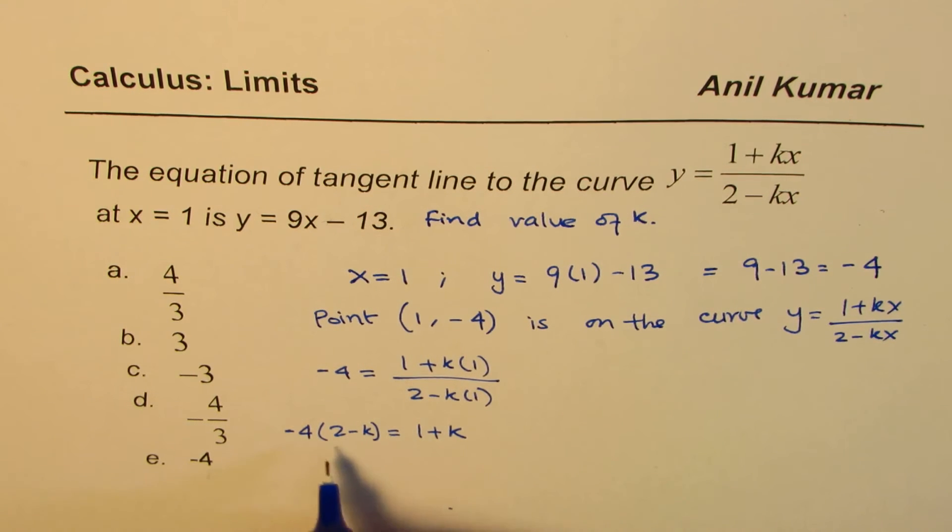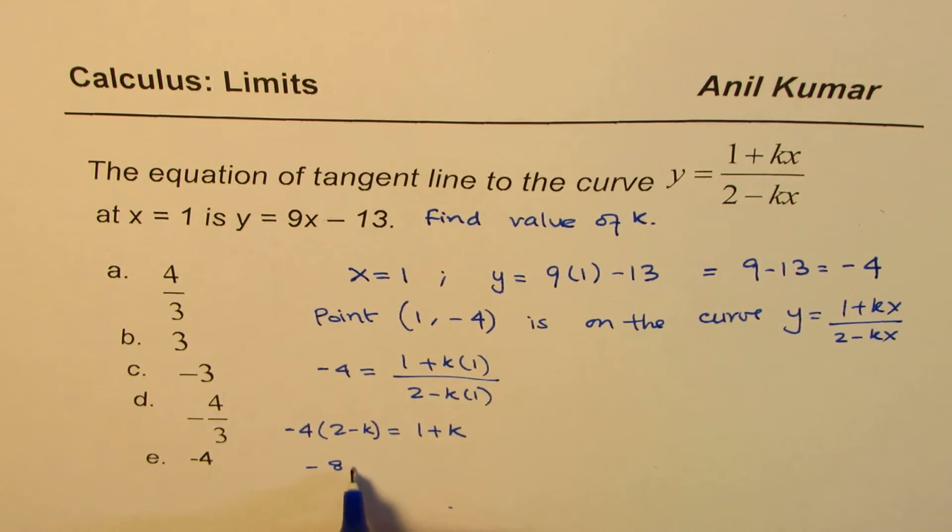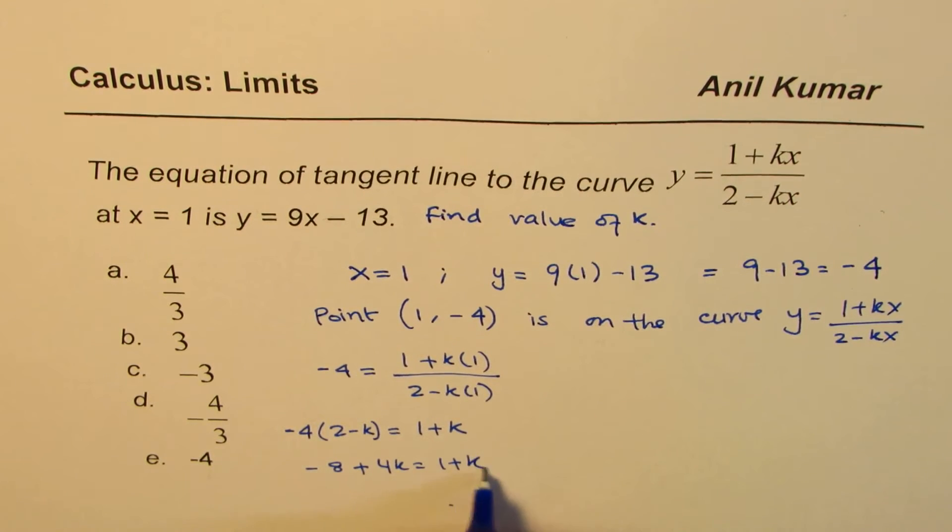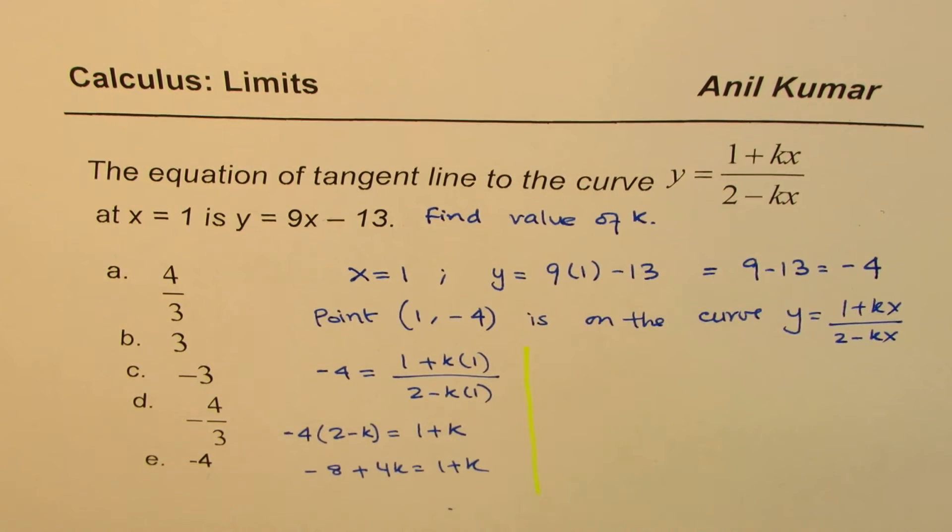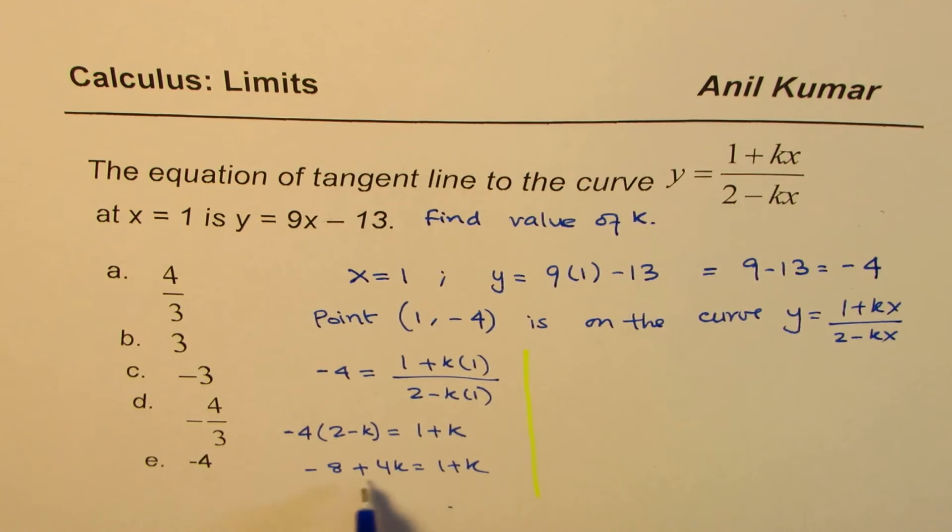Then we can rearrange. Let me open this up: -8 + 4k = 1 + k. Let's solve this and check our answer. I hope you found this method very easy.